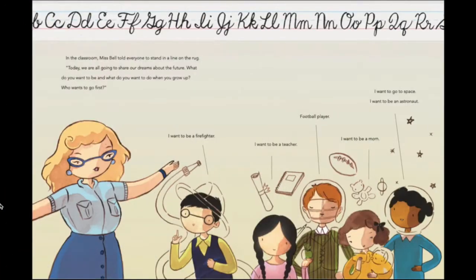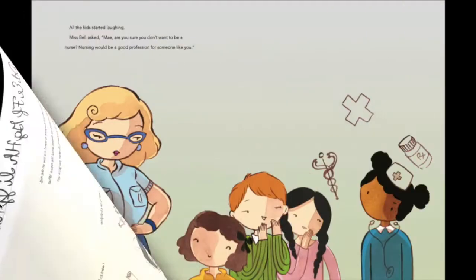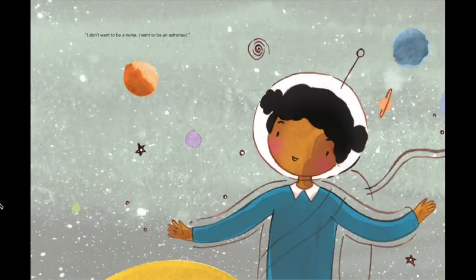In the classroom, Ms. Bell told everyone to stand in a line on the rug. Today, we are all going to share our dreams about the future. What do you want to be and what do you want to do when you grow up? Who wants to go first? I want to be a firefighter. I want to be a teacher. Football player. I want to be a mom. I want to go to space. I want to be an astronaut. All the kids started laughing. Ms. Bell asked, May, are you sure you don't want to be a nurse? Nursing would be a good profession for someone like you. I don't want to be a nurse. I want to be an astronaut.